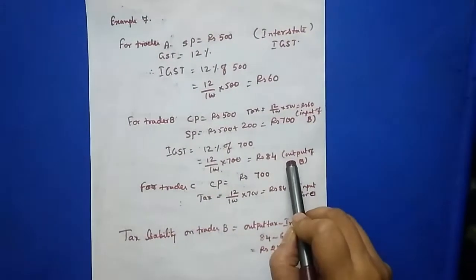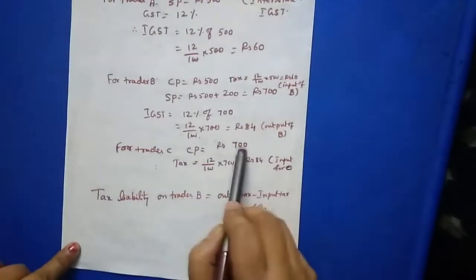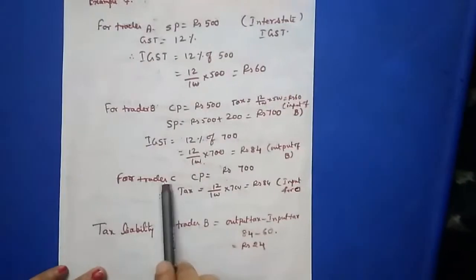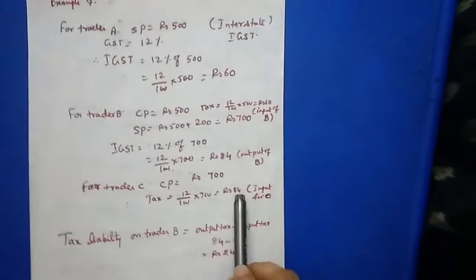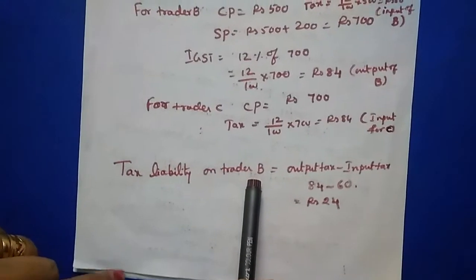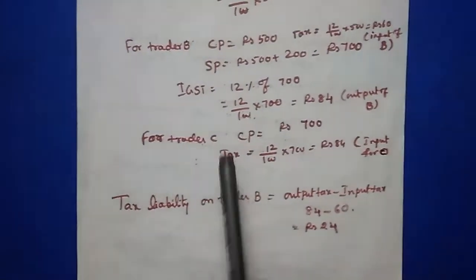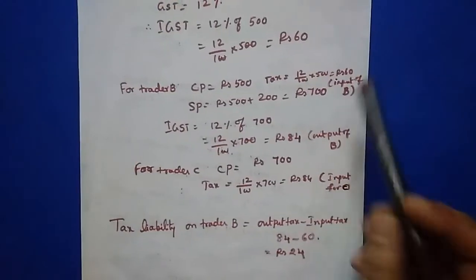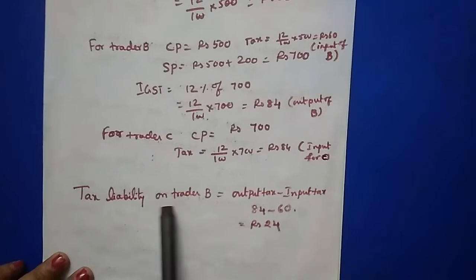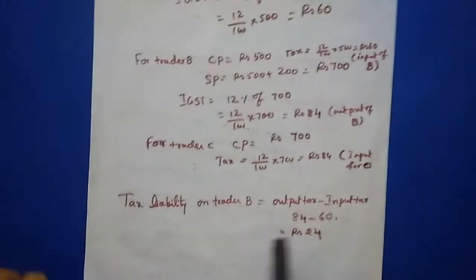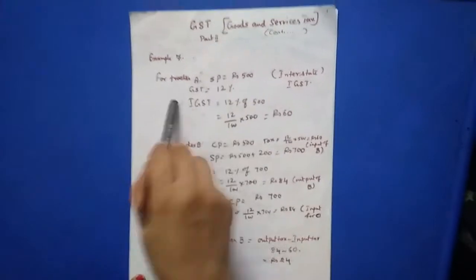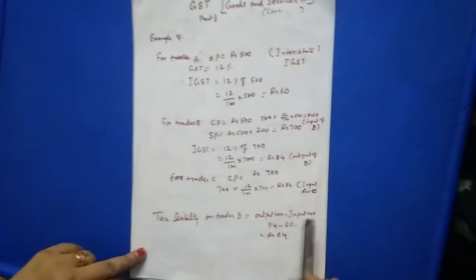For Trader C, CP is 700 because Trader B is selling for 700. Tax on CP is the input tax: 12% of 700. The question asks for tax liability on Trader B - how much tax B is paying to the government. B paid 60 rupees to A and collected 84 rupees from Trader C. Output tax minus input tax = 84 minus 60 = 24 rupees. He will pay 24 rupees to the government.